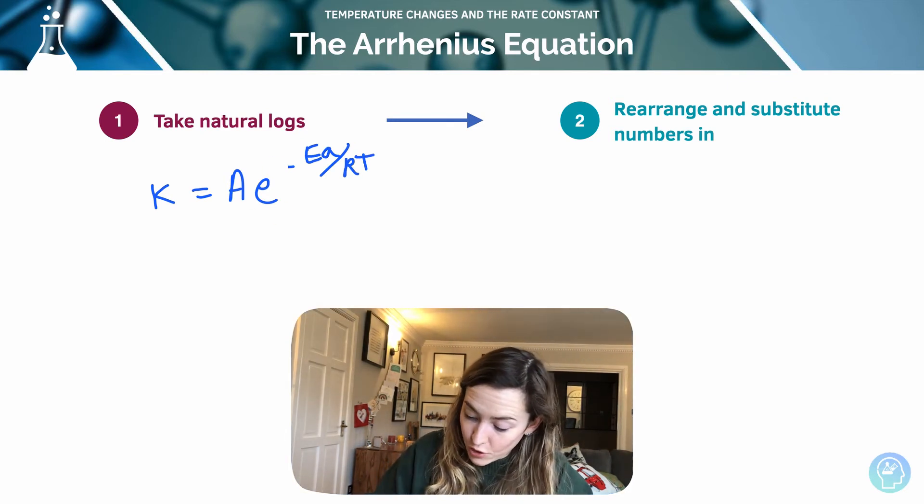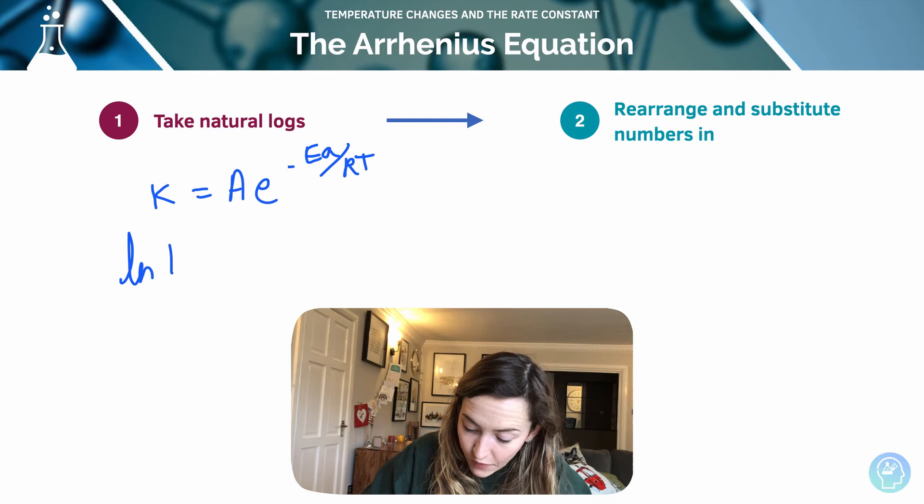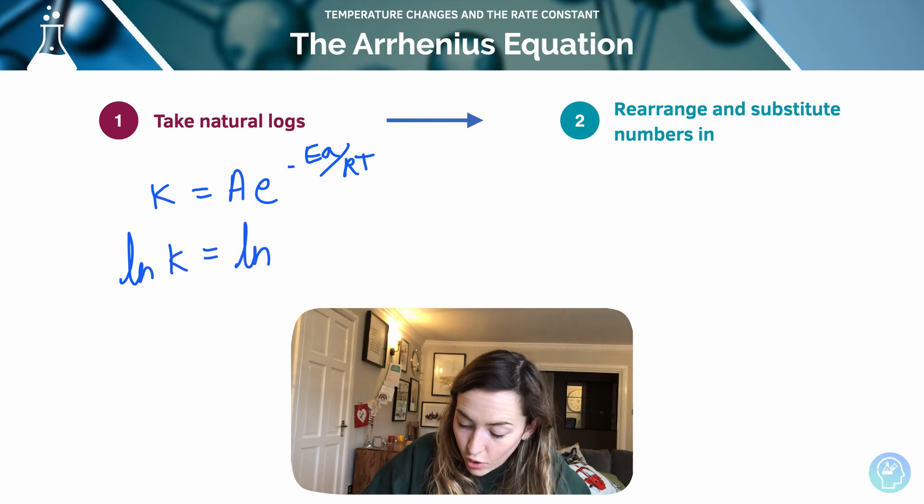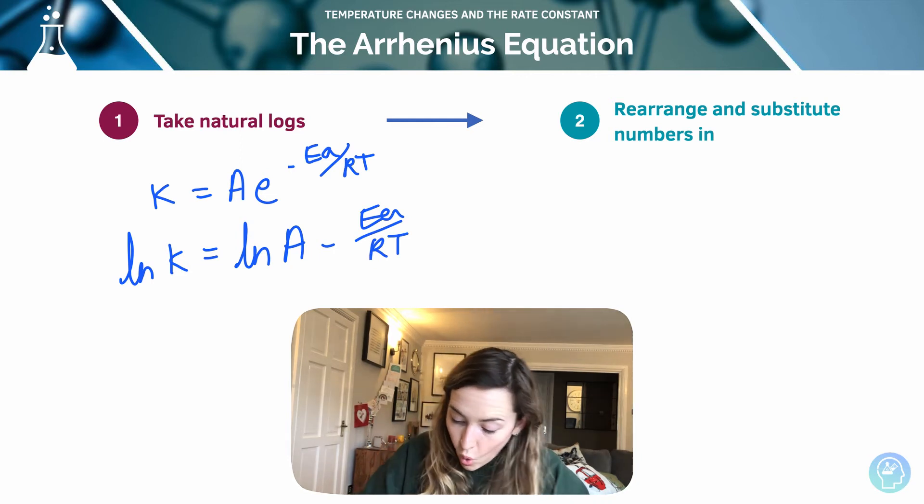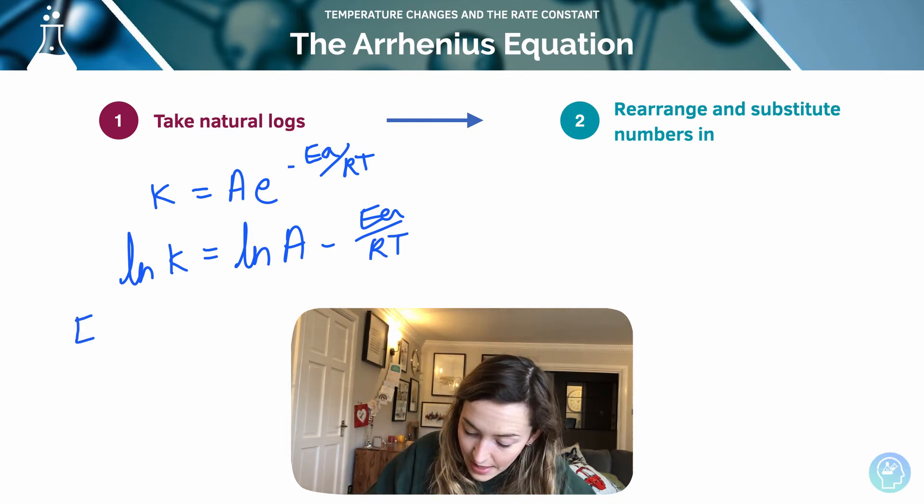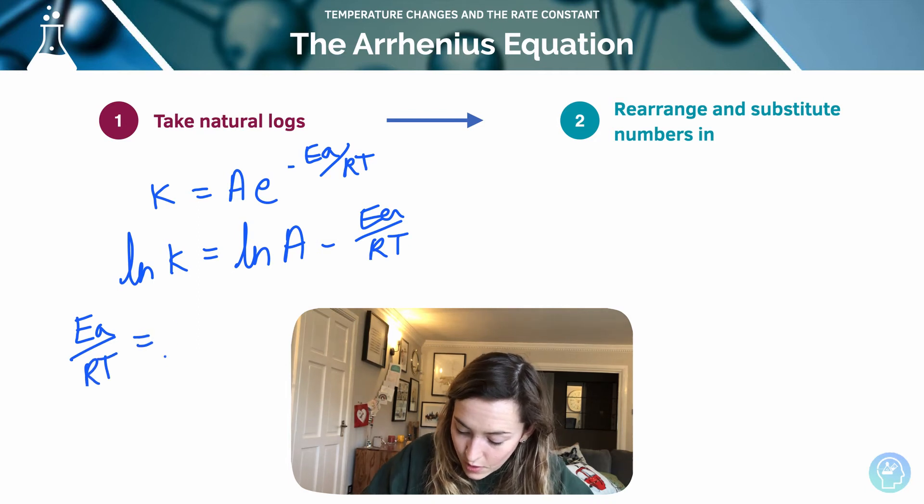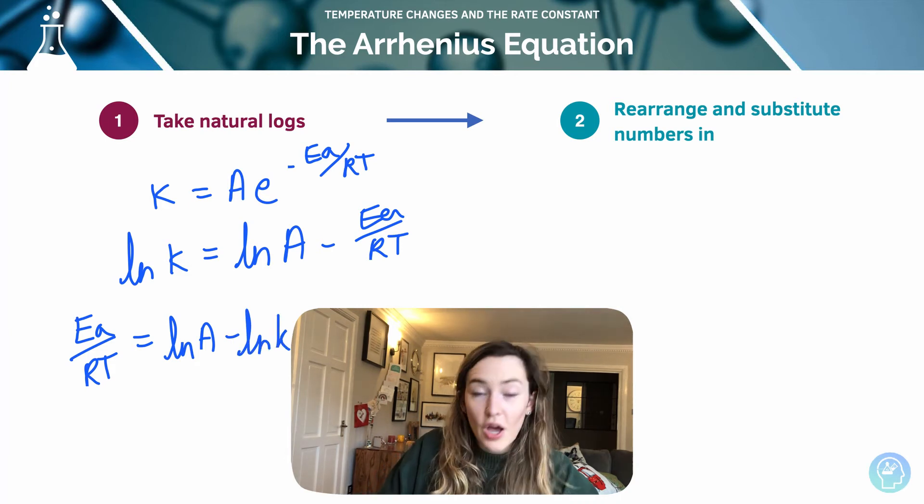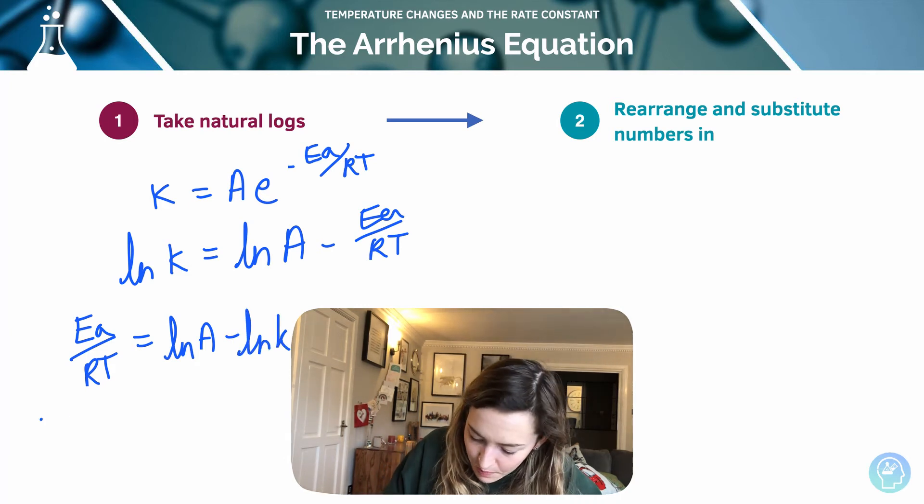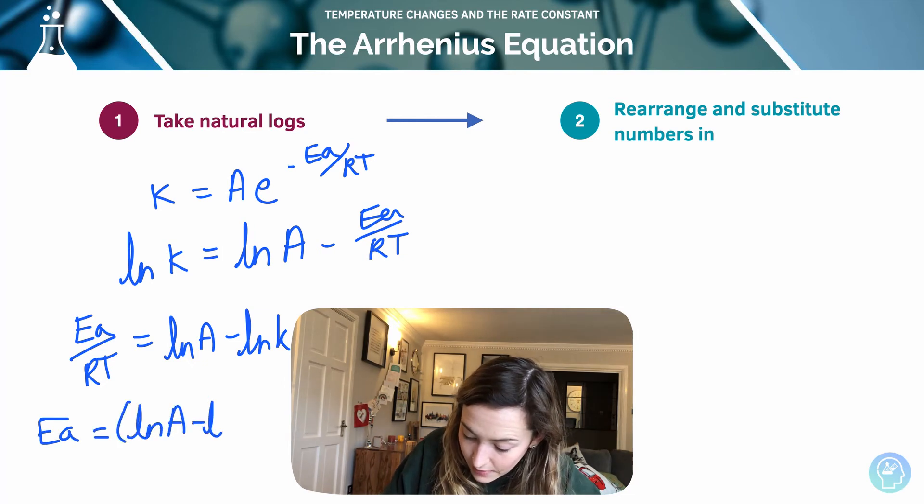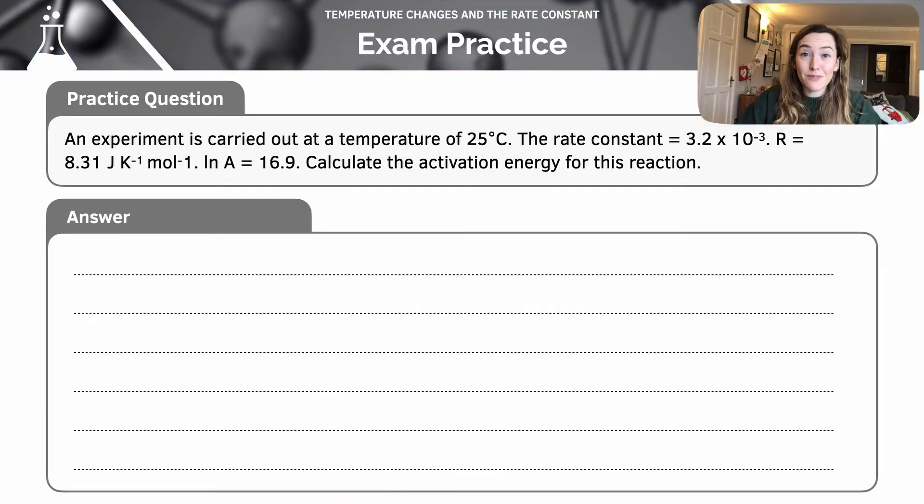So the natural log of k is equal to the natural log of A minus Ea over RT. So I can also say that Ea over RT is equal to ln A minus ln k. We can rearrange further just to make Ea my subject. In this particular case would be ln A minus ln k times RT. Let's put that into practice.